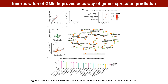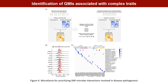Interestingly, many of these genes encode cell adhesion molecules. To facilitate the application of our method for screening GMIs using multiomics data, we developed an R package called Microgenics, which consists of three modules: training on the reference transcriptome using genotype, microbiome, and their interactions; predicting gene expression levels using genotype and microbiome data; and associating the predicted expression with complex traits.